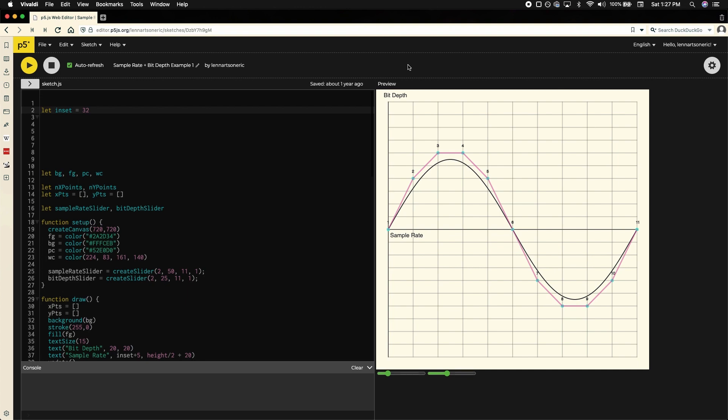To find out how many amplitudes that gives you, just take 2 to the power of the bit depth. So a bit depth of 16 raised to the second power would give you 65,536 possible amplitudes.